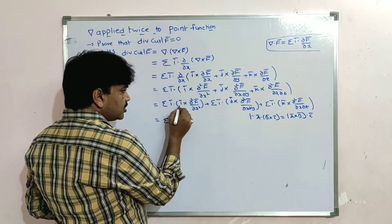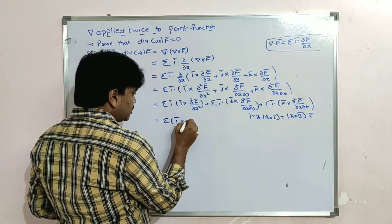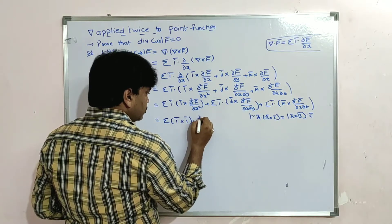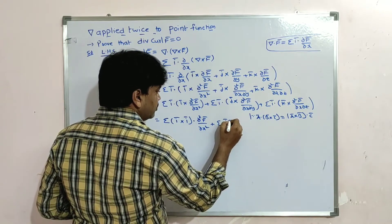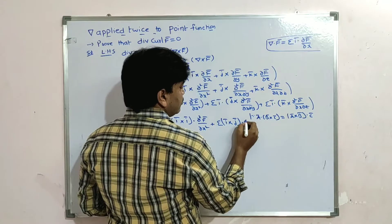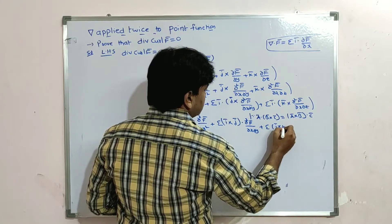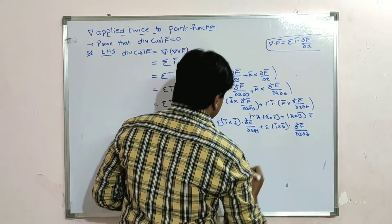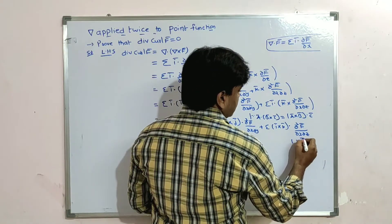Applying that formula, we can write: sigma (i̅ cross i̅) dot (∂²F̄/∂x²) + sigma (i̅ cross j̅) dot (∂²F̄/∂x∂y) + sigma (i̅ cross k̅) dot (∂²F̄/∂x∂z).